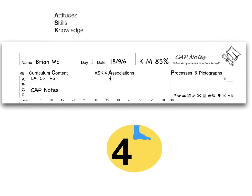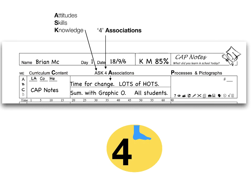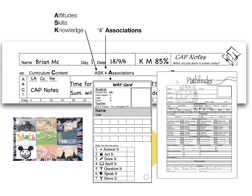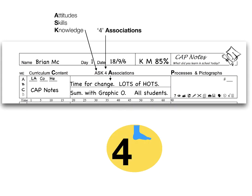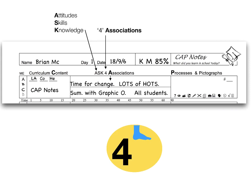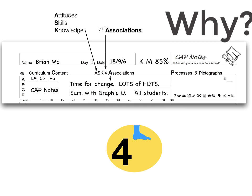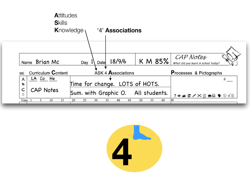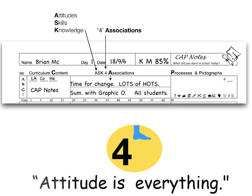Step 4: creating associations. Associations are words or phrases that reinforce and extend the ideas presented in the curriculum — keep associations short. The number 4 represents the four tools of a smart way to learn: cap notes, game cards, way cards, and pathfinder. Also, ASK stands for attitudes, skills, and knowledge, which are the pillars of curriculum, just not in the traditional order. I encourage teachers to always begin lessons with 'why' — teachers must stimulate a student's attitude before meaningful learning can take place.